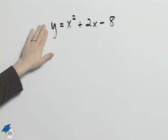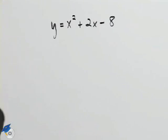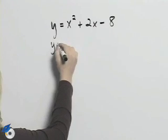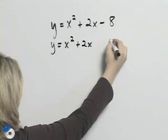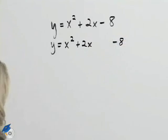Since we're asked to graph this equation it's best to write this in standard form. We'll do that by completing the square. So I'll rewrite this as y equals x squared plus 2x. I'll leave a space and then I'll write minus 8.